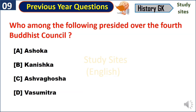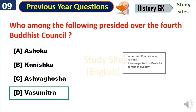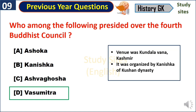Who among the following presided over the 4th Buddhist Council? Vasumitra. The venue was Kundalvana in Kashmir and it was organized by Kanishka of the Kushan dynasty.